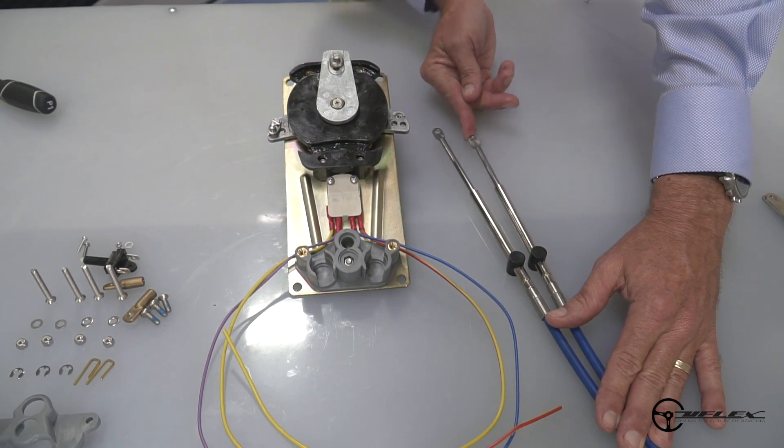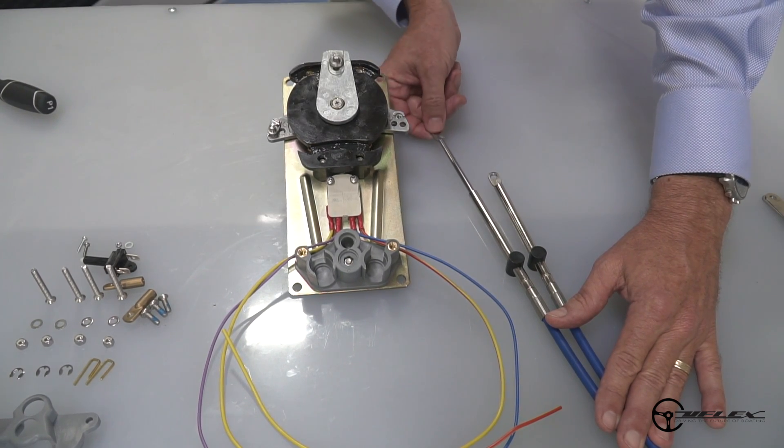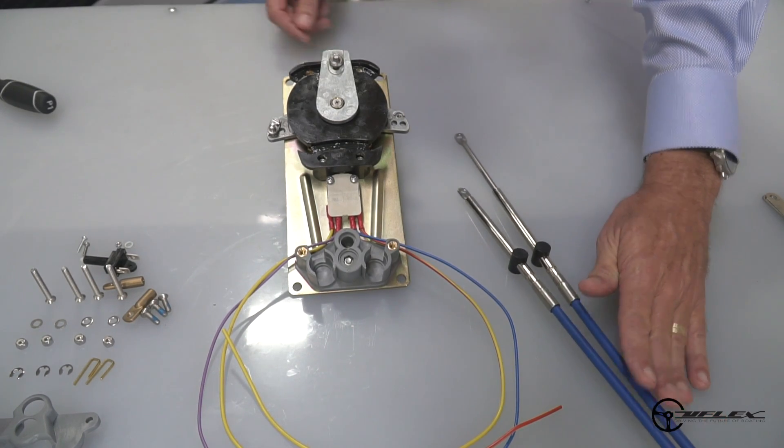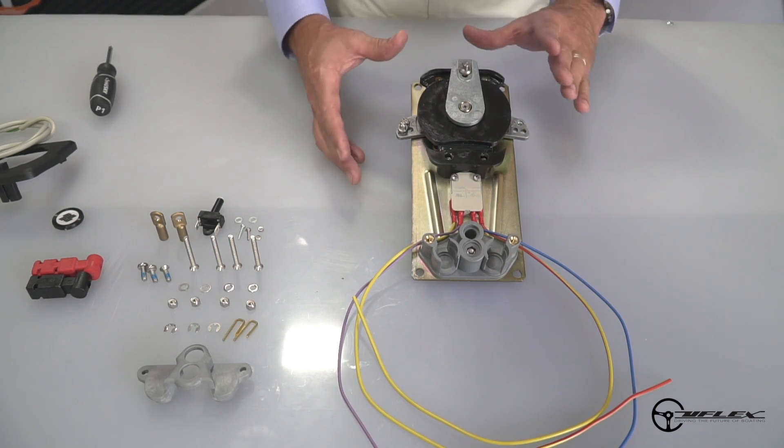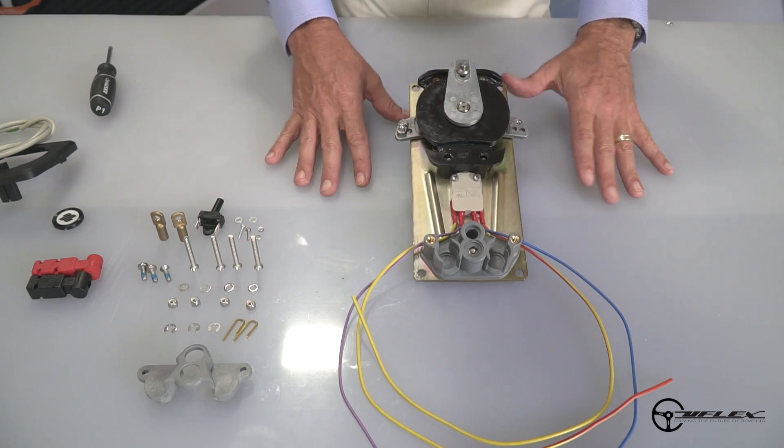That's going to require a different orientation of the throttle cam depending on whether it's push for throttle or pull for throttle. Now that I've determined whether my boat is either push for throttle or pull for throttle, I've got to make sure that my control is set up to accommodate that.